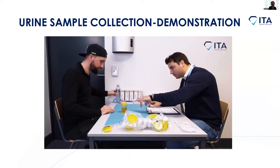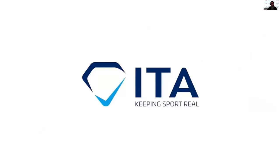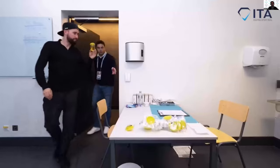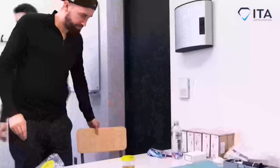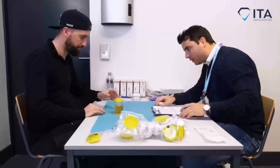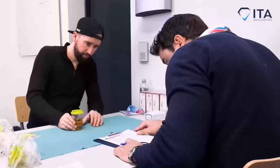Now for the moment when the sample is actually collected. We're obviously not going to show a video of someone peeing, but we do want to show you what happens next once the urine sample has been collected. In the video: 'Please place your sample on the table.' The DCO checks the volume: 'Can you just turn this slightly around so I can see how many milliliters you have? So 125 — perfect.'